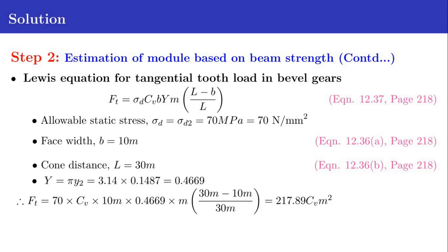By substituting the values in the equation for FT, we get FT as 79,617.8 divided by M. Now we find out the tangential tooth load based on the Lewis equation. For bevel gears the Lewis equation is: FT equals sigma D CV Y M times (L minus b) divided by L, equation 12.37 in page 218. Sigma D is the allowable static stress, sigma D2, which is 70 MPa or 70 Newton per millimeter square.